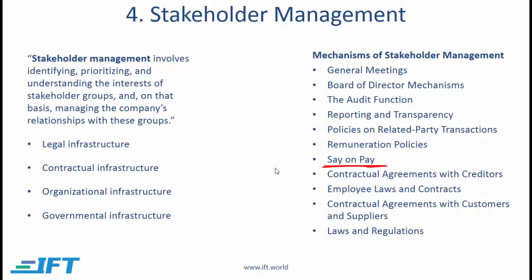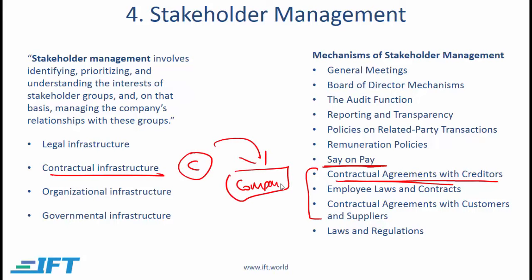Contractual agreements with creditors fall under contractual infrastructure. Creditors supply money to the company, so there must be an agreement — called an indenture — which is a legal contract. This contract contains several covenants, and the lending may be secured through collateral; both topics will be covered in detail in fixed income.